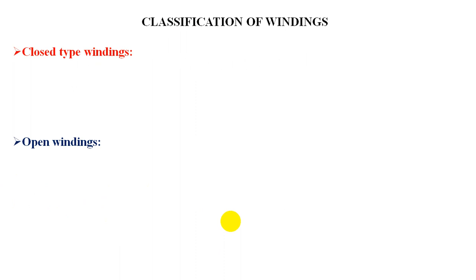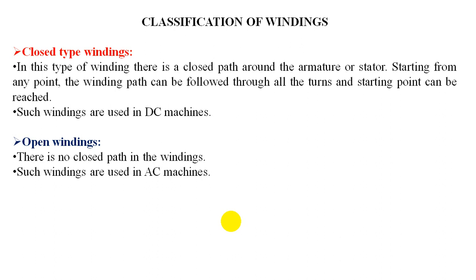Classifications of winding: there are two types — closed and open. Closed winding is generally used for DC and open winding is generally used for AC. In a closed type winding, there is a closed path around the armature. In an open type, as the name suggests, there is no closed path. AC machines use open winding and DC machines use closed type.